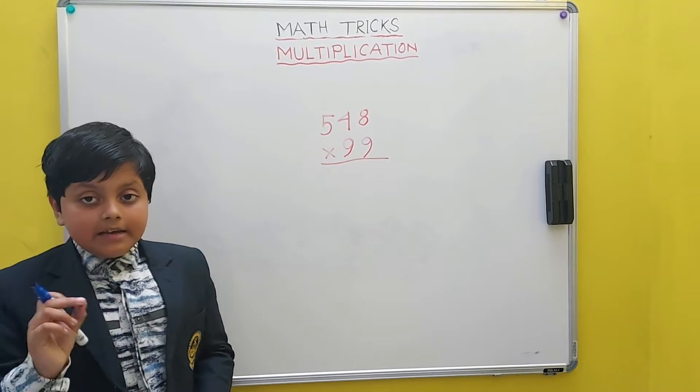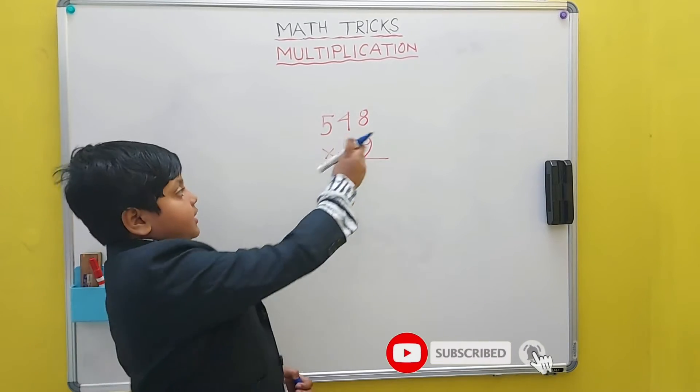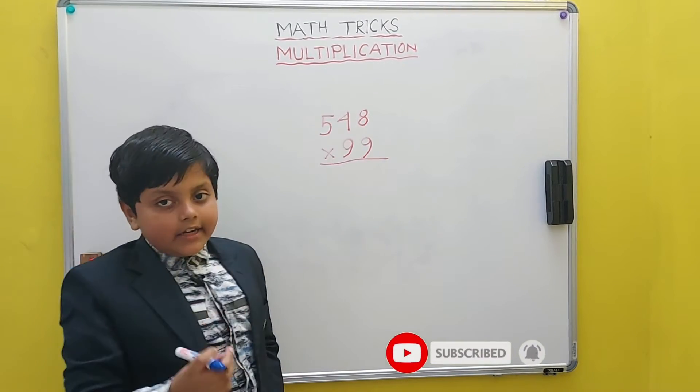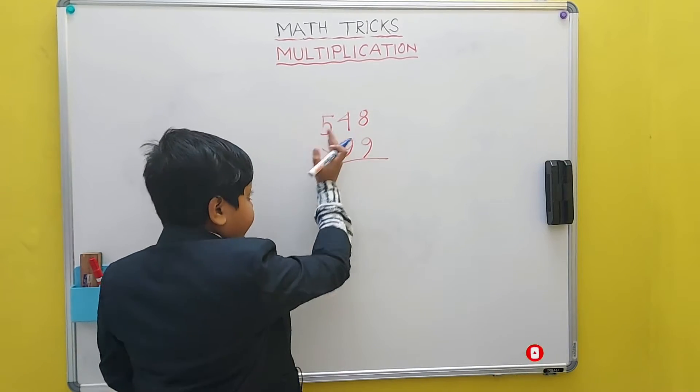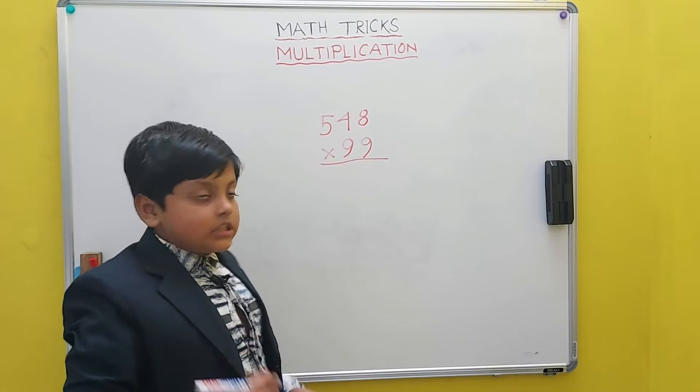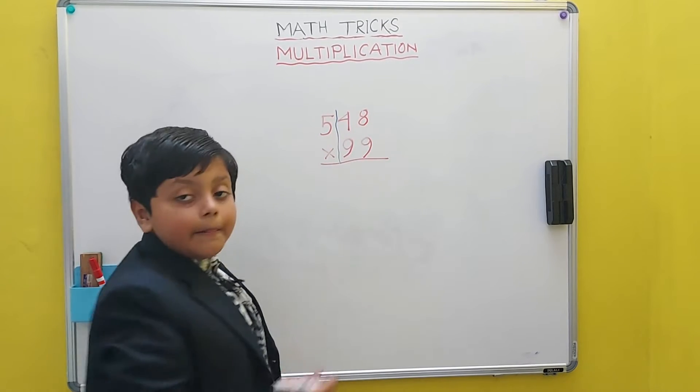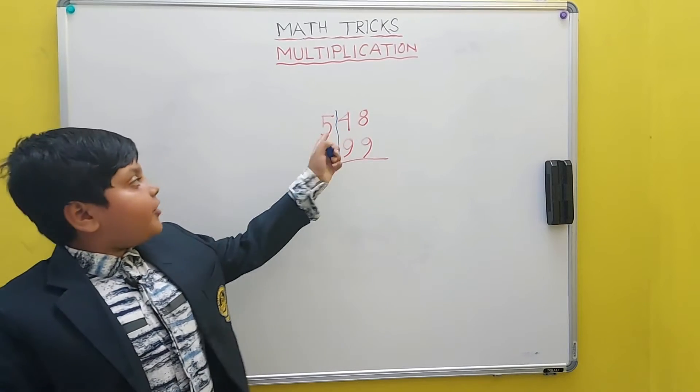We have to solve this by firstly taking numbers from the right, we have to check where the 9 ends. The 9 ends at 4. So we will separate 4, 48 and the 5.